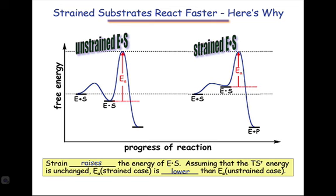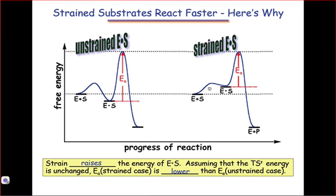The reaction coordinate diagrams on this slide illustrate the idea energetically. When a molecule is placed under strain or placed into a strained conformation, it's raised in energy. As long as this doesn't affect the transition state energy for the process it needs to undergo, the activation energy to go from the strained enzyme-substrate complex to the transition state is lowered by the introduction of strain. An unstrained enzyme-substrate complex would have to surmount a larger barrier in order to end up at the same product.